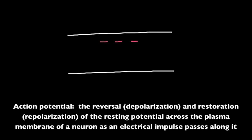Action potential is defined as the reversal or depolarization and restoration or repolarization of the resting potential across the plasma or cell membrane of a neuron as an electrical impulse passes along it.